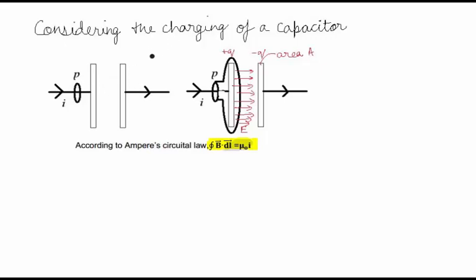We consider the charging of a capacitor. These are the plates of the capacitor, and we have a loop over here. We assume the charge on the capacitor is +Q and -Q, and this is changing with time. The area of the capacitor is A.